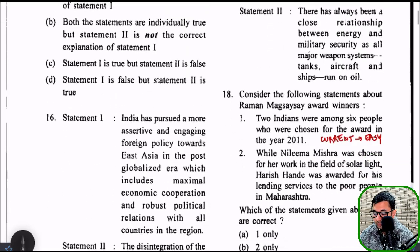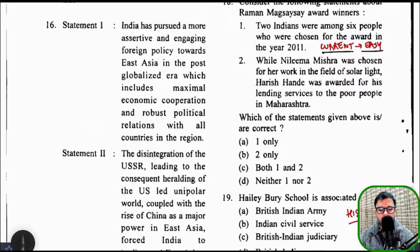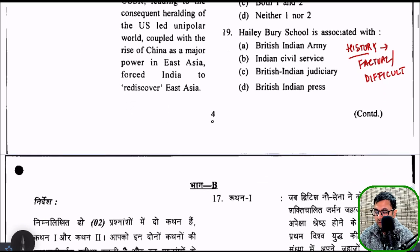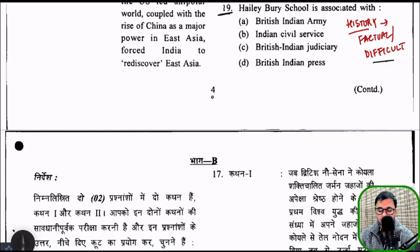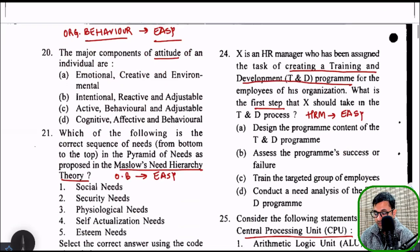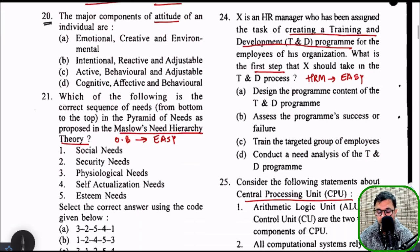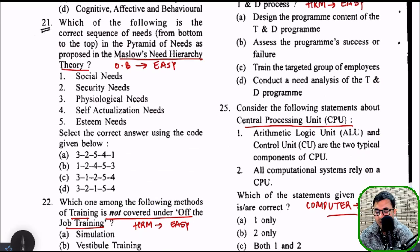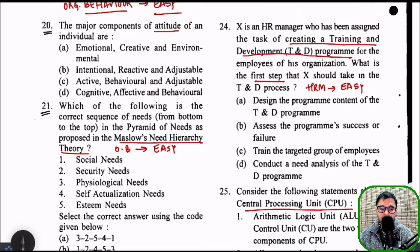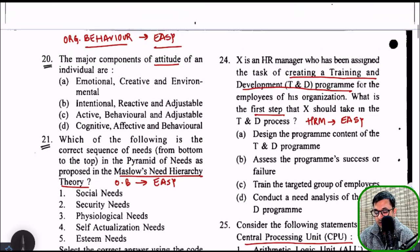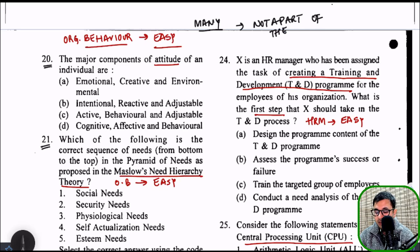There were three questions from statements and arguments. The third question was from current affairs and was easy because it was a factual question. Question number 19 was from history — a factual and difficult question; so in history, analytical as well as factual questions were asked, and the same can be repeated this year. Question number 20 was from organization behavior — a very easy question. Question number 21 was again from organization behavior, very easy. In the whole paper, there were many questions from organization behavior, but it is not a part of the syllabus. So this year too, topics which are not part of the syllabus might be picked up in the examination.